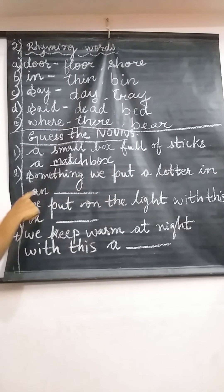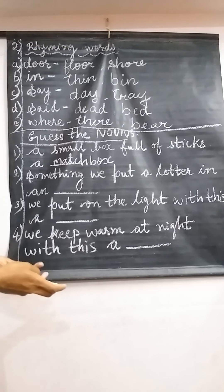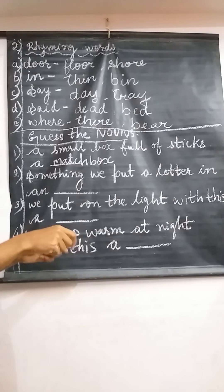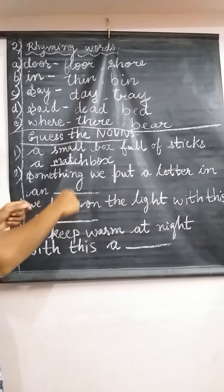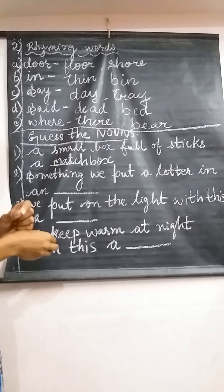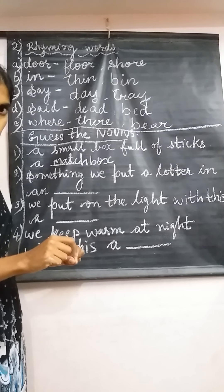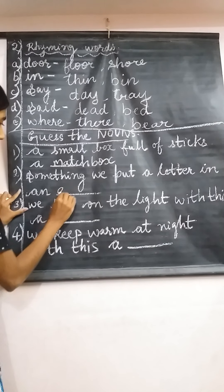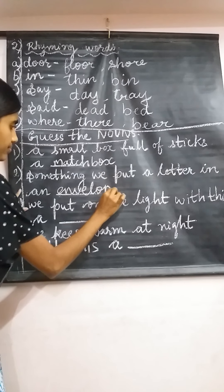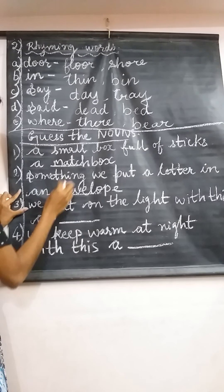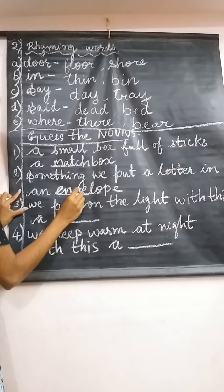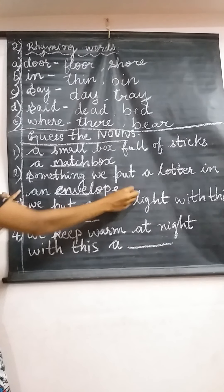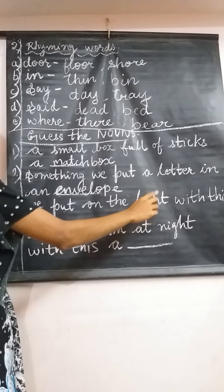Next: 'Something we put a letter in — an dash.' Where do we put a letter? We put a letter in an envelope. We don't directly drop the letter in the post box — we use an envelope. So the answer is 'envelope': E-N-V-E-L-O-P-E.